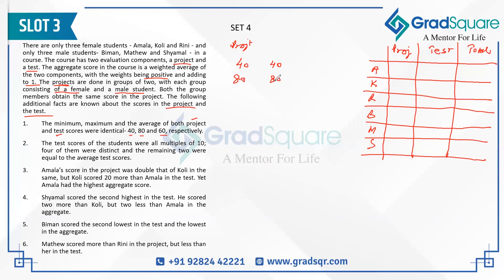Looking at scores of 40, 40, 80, 80 — the average of these four is already 60, matching the overall average. The remaining two students also work as a pair and must get the same score. The only value that keeps the overall average at 60 while being equal for both is 60. So project scores are: 40, 40, 60, 60, 80, 80. We now know the scores but not yet which student gets which.